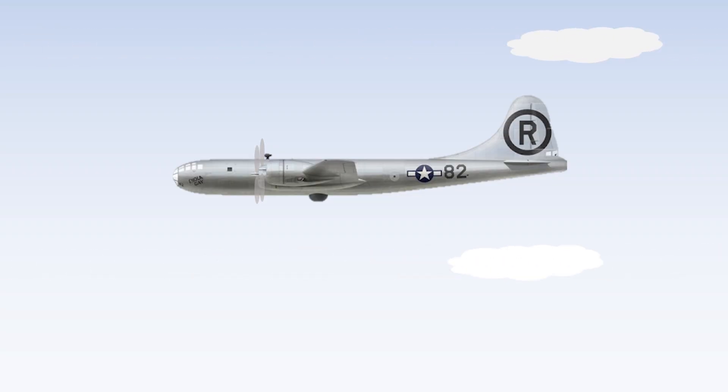The bomb was carried by plane, B-29 bomber named Enola Gay, to the targeted area, Hiroshima, Japan.